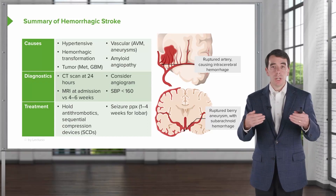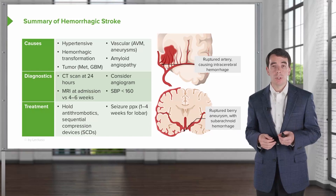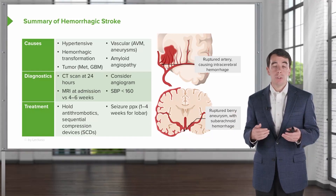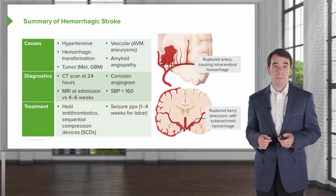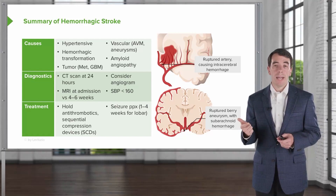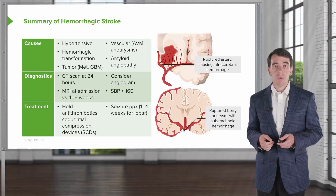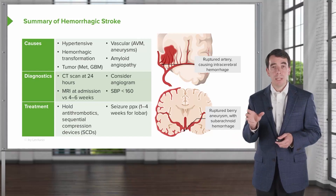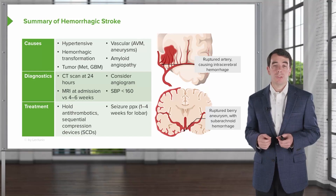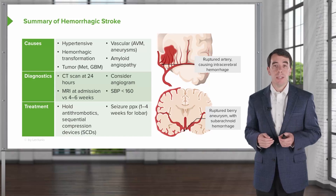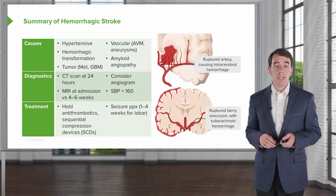Treatments for hemorrhagic stroke are also very different. With ischemic stroke, we're adding antiplatelets and anticoagulants; with hemorrhagic stroke, we're taking those away. There's nothing we can do to stop the hemorrhage that's occurred, but we want to prevent its expansion. We hold antithrombotics and stop anticoagulants. We don't use those for prophylaxis in hospitalized patients; instead, we use things like sequential compression devices. Some patients may develop seizures, so we manage those potential complications, particularly in hemorrhages involving the outer cortical surface and gray matter.